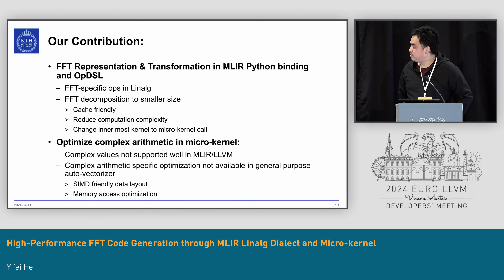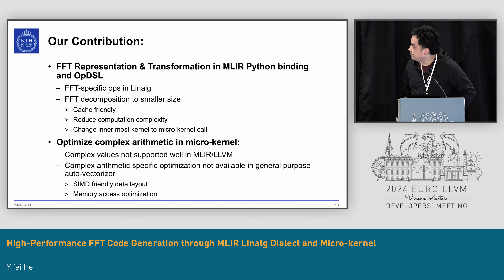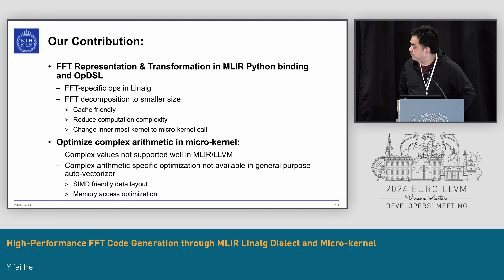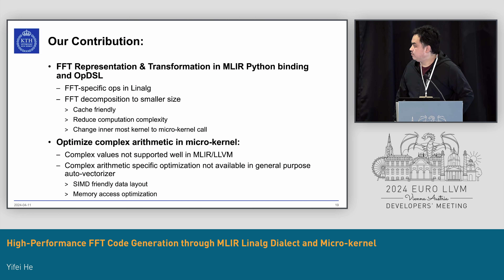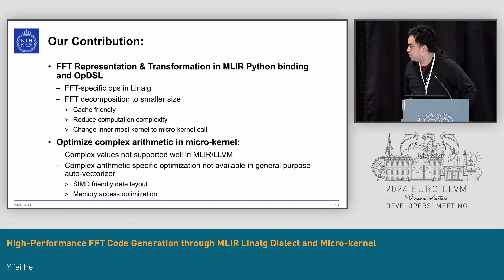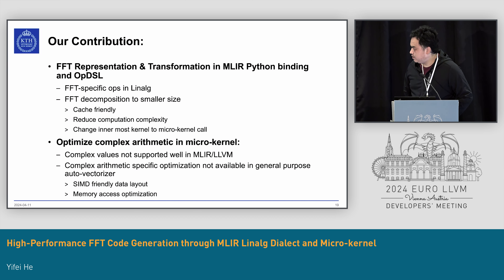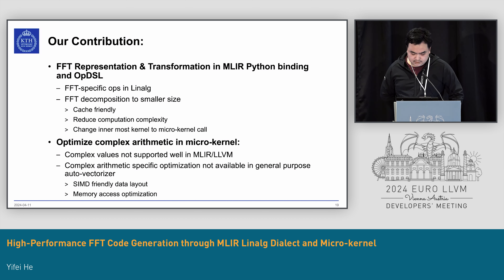To sum up, our contributions are: we introduced representation and transformation of FFT in the Linalg dialect, with a frontend in MLIR Python binding. We applied a series of transformations in the Linalg dialect, such as formula rewriting for decomposition for cache-friendliness and reduced complexity. Finally, they map to a microkernel call, where we applied optimizations for a more SIMD-friendly data layout and memory access patterns.